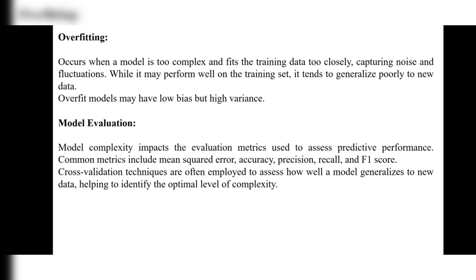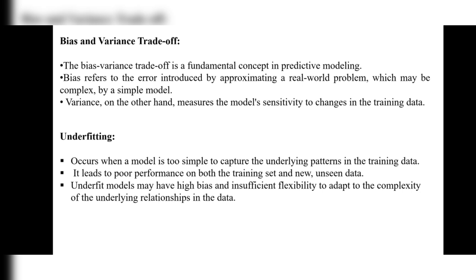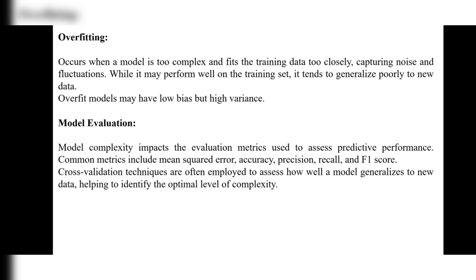Overfitting occurs when a model is too complex and fits the training data too closely, capturing noise and fluctuations. While it may perform well on the training set, it tends to generalize poorly to new data. Overfit models may have low bias but high variance. Remember the difference between underfitting and overfitting.